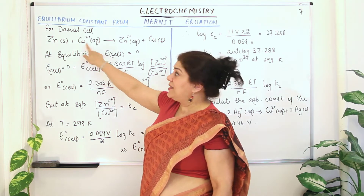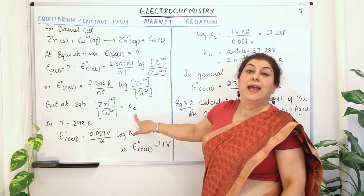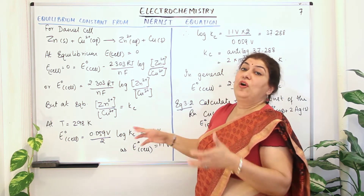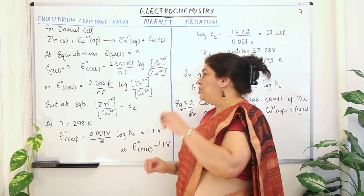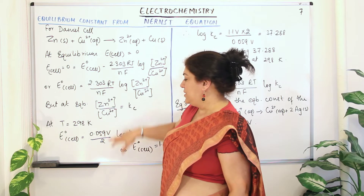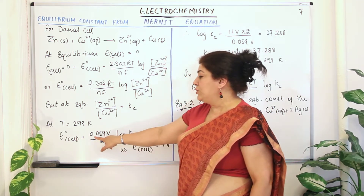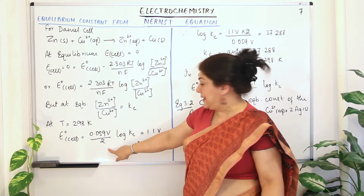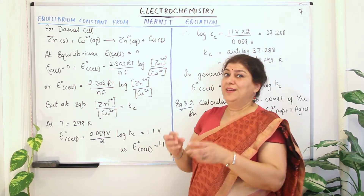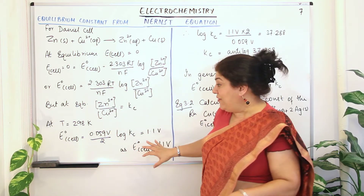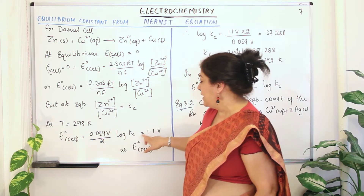Zinc and copper are both solids, so their concentrations are one and don't appear in Kc. This confirms we can calculate Kc from the Nernst equation at equilibrium. Assuming temperature is 298 K, n = 2 for the Daniel cell reaction, and substituting R, T, n, and Faraday's constant, the equation becomes: E°_cell = (0.059 / 2) × log Kc. Since E°_cell = 1.1 volts: (0.059 / 2) × log Kc = 1.1 V.